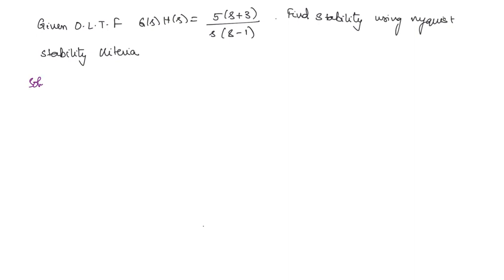First we will write the equation: Z is equal to N plus P. We need to find N using the Nyquist plot, and P is the number of poles in the right half of the s-plane of the open loop transfer function. P we can get directly from the given transfer function. Here P is equal to 1 because (s−1) is present in the denominator, so s = +1 is a pole in the right half. So P is equal to 1.